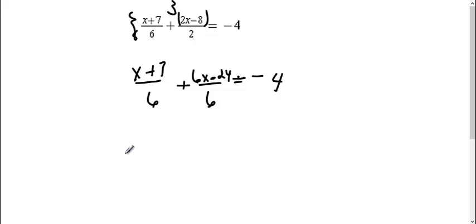Okay, so now that I have a common denominator, I can make one fraction. 6 goes on the bottom. I can just write it on the top: x plus 7 plus 6x minus 24. And then I still have equals negative 4.